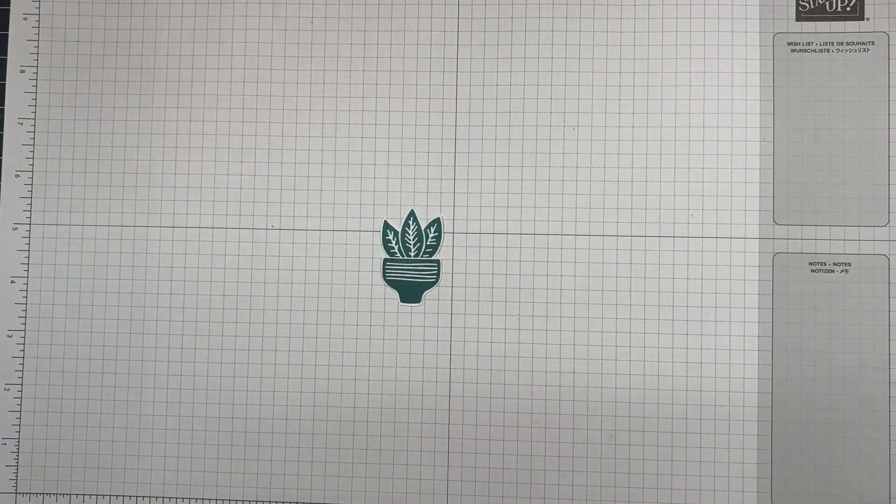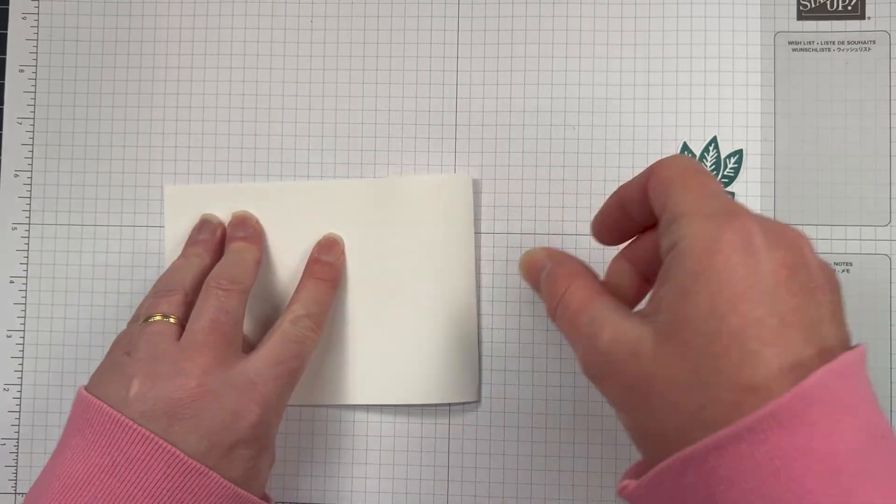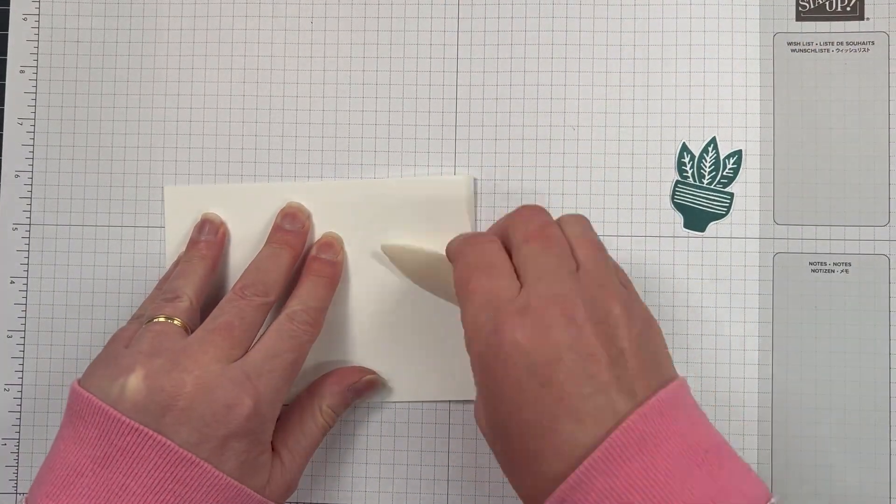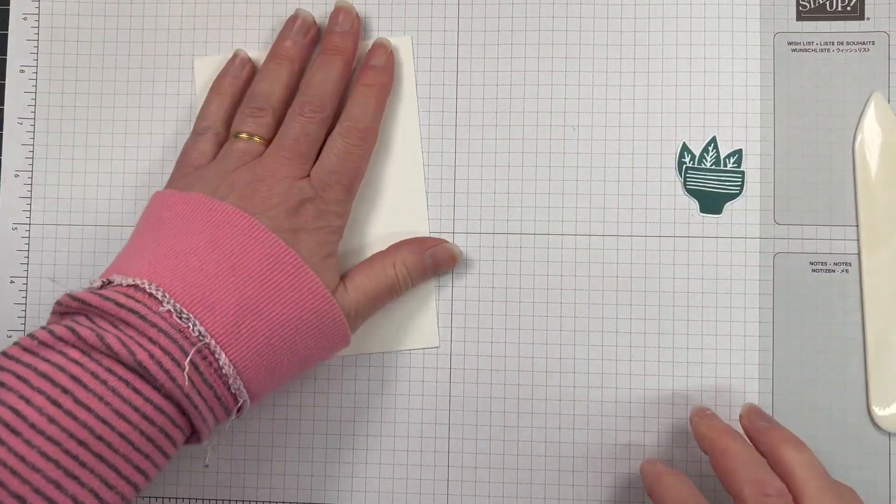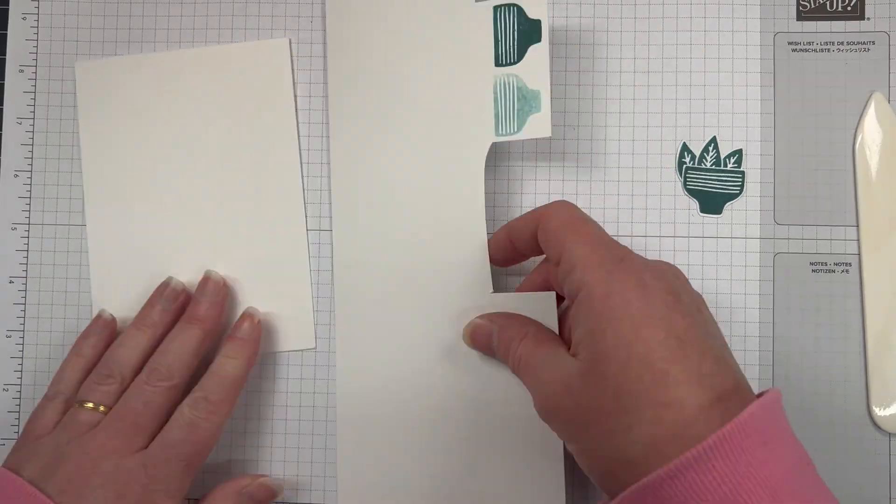And I've just got that very simple little pot plant with the—I'm going to call them mother-in-law's tongue plants. That's what they look like to me anyway.